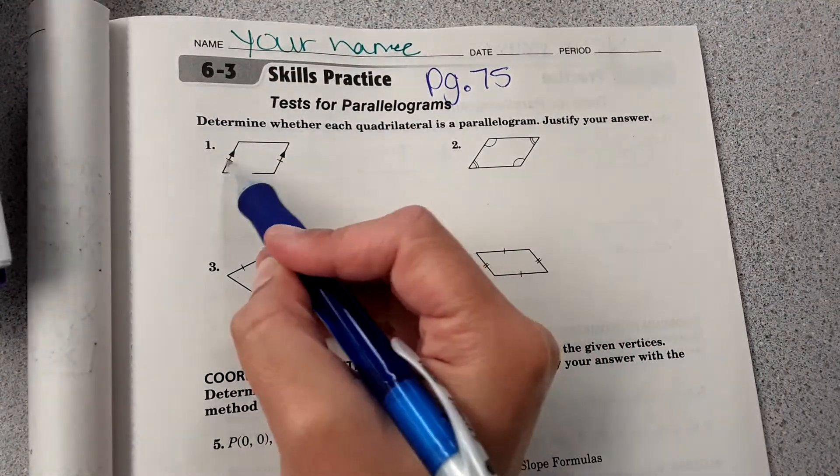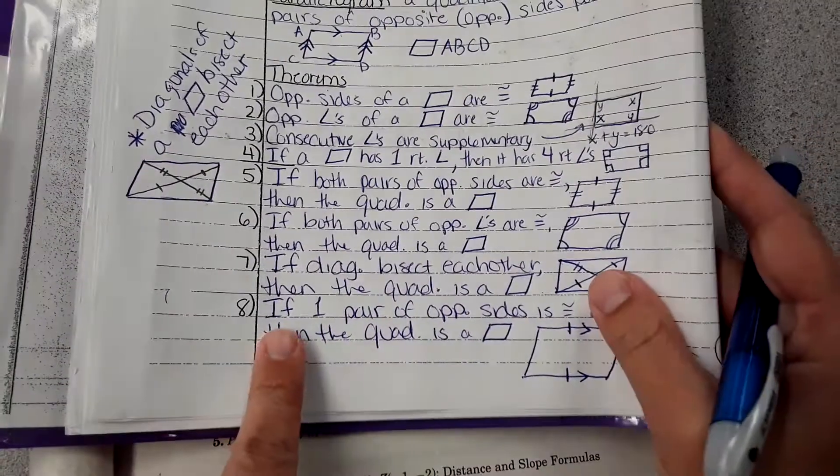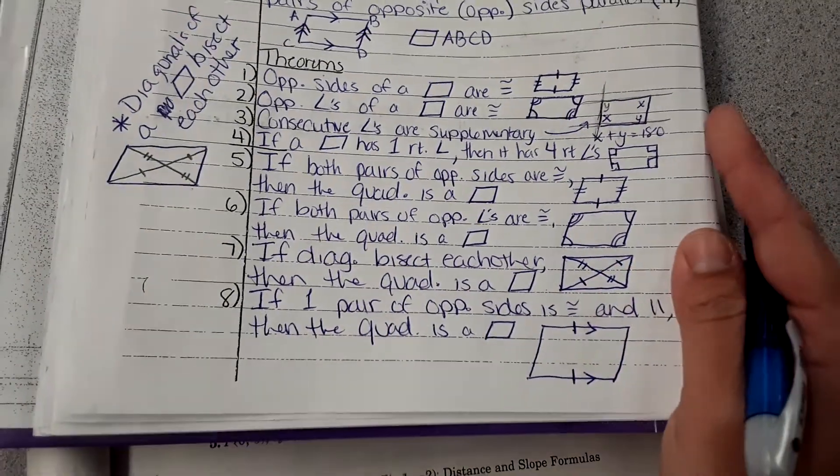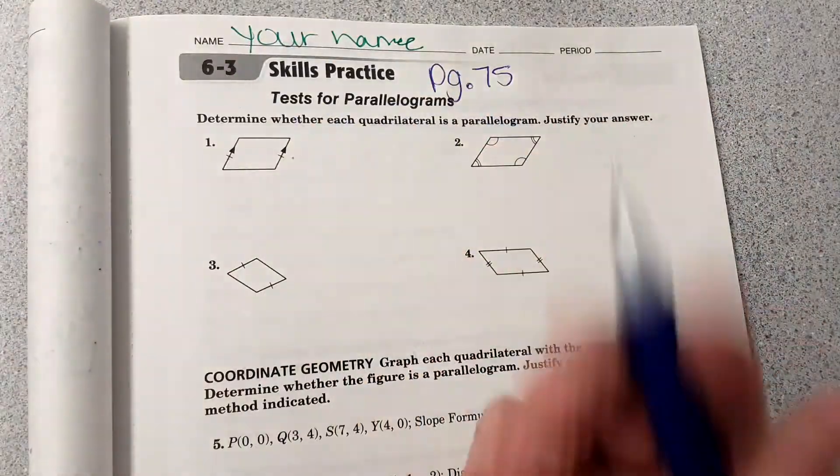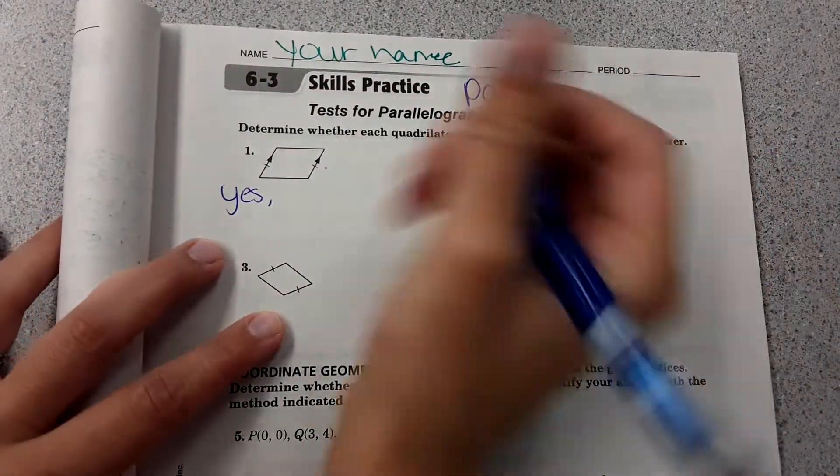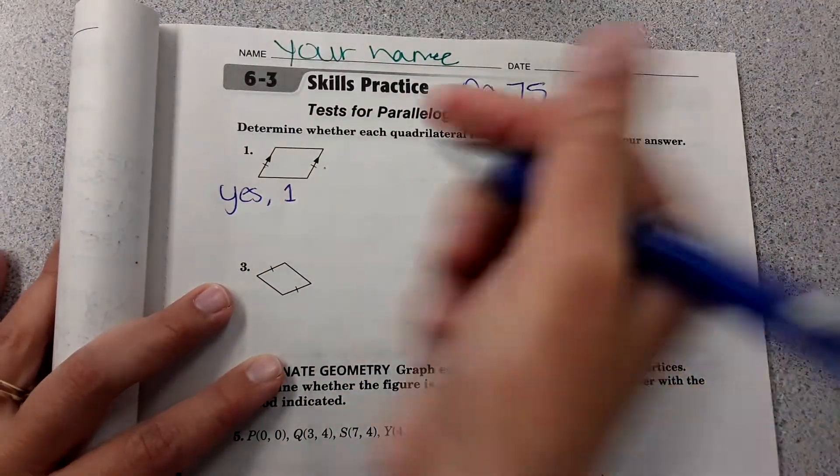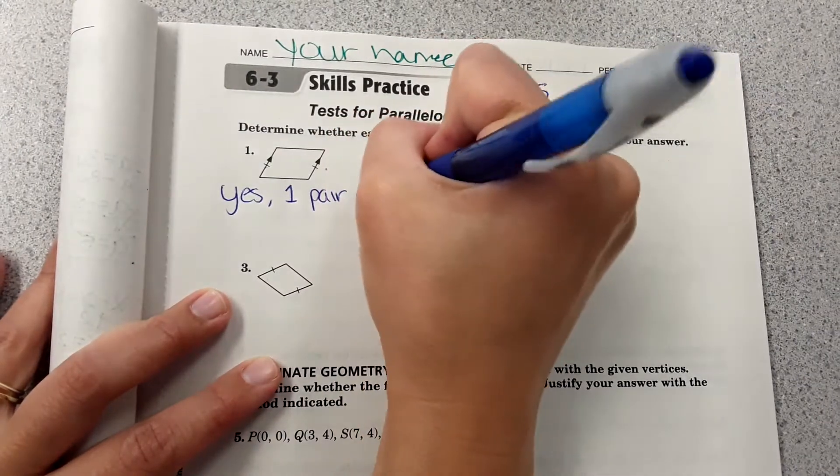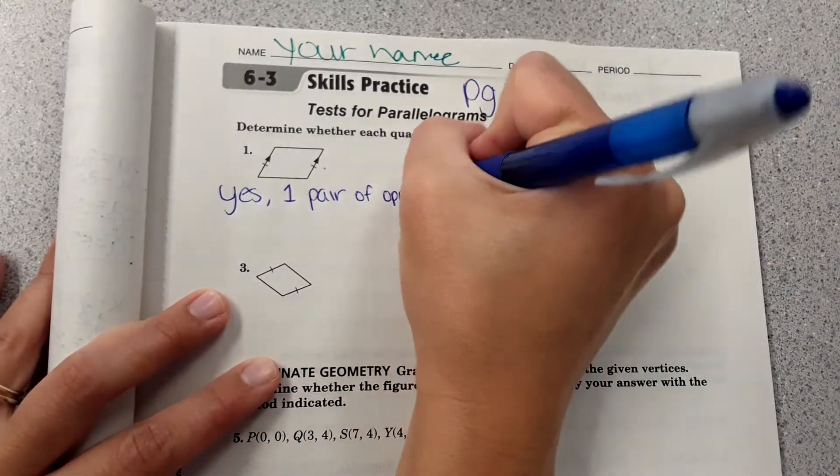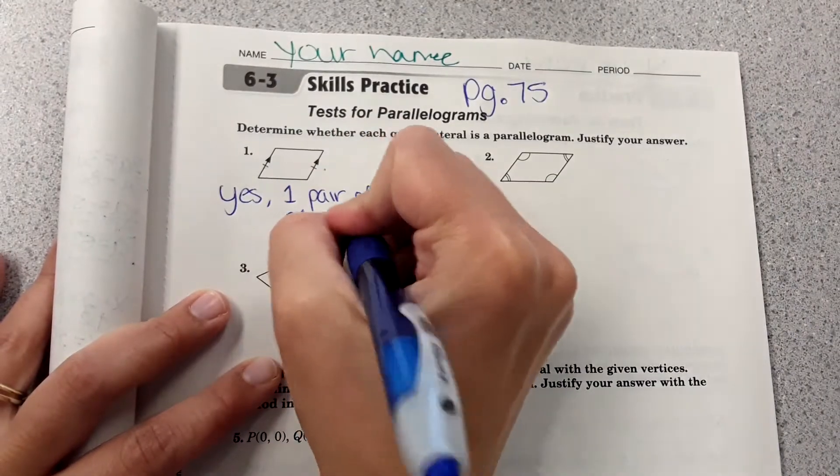The first one shows one pair of opposite sides congruent and parallel, and that was number eight. If one pair of opposite sides is congruent and parallel, then you have a parallelogram. So this one, yes, it's a parallelogram because you have one pair of opposite sides congruent and parallel.